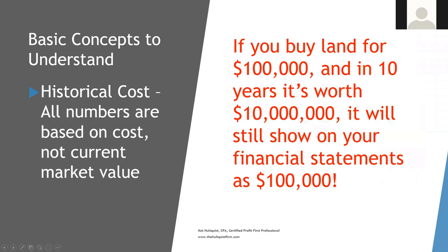The next thing is historical cost. This also trips people up. What this means is that everything on these financial statements — particularly the balance sheet — is based on what's called historical cost. This means that whatever you buy something for, whatever you pay for it, whatever its original cost is, that's what's going to be on there. It's not going to be a current market value. So if you buy land for $100,000 and in 10 years it's worth $10 million or even $100 million, it's still going to show on your financial statements as $100,000. Some people get confused when they have assets in their business that have appreciated a lot — it's still going to show up at what they originally paid for it.